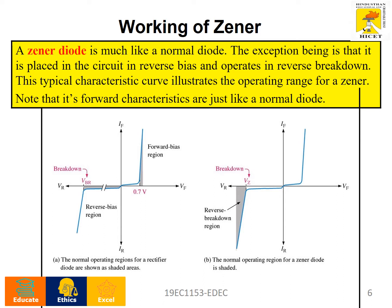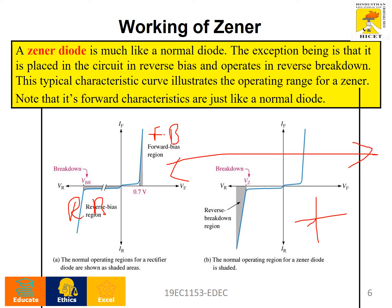Regarding the working of the zener, this is the forward-biased condition and this is the reverse-biased condition. The forward-biased behavior of the zener is the same as that of an ordinary p-n junction rectifier diode. In the reverse-biased condition, voltage stabilization is performed. The V-I characteristics show a constant voltage being maintained, and the zener diode is operated in reverse-biased condition, while in forward bias it works like a normal diode.